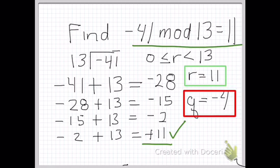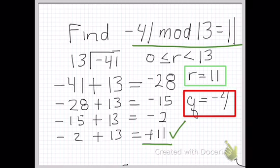So r equals 11 and q equals negative 4. Our remainder equals 11, so negative 41 mod 13 equals 11, and our quotient is negative 4. Now, why is q a negative number? With long division we can check: 13 times negative 4 has to equal a negative number because we have negative 41. If we used a positive number we'd say 13 times 4 and get a positive result, so we have to choose a negative number for q, our quotient.